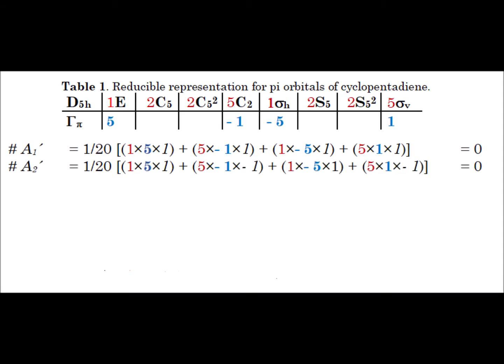For the irreducible representation A2 prime, the characters from the character table are 1, -1, 1, and -1. As a result, the reduction formula also gives a value of zero, which tells us there are no A2 prime irreducible representations in the reducible representation for pi bonding in this molecule.